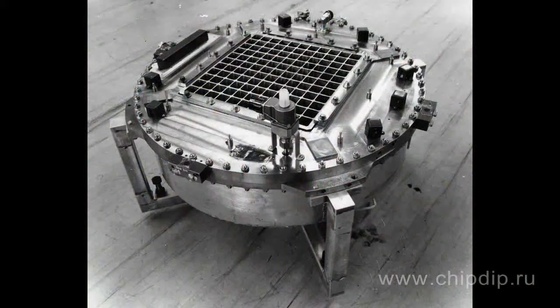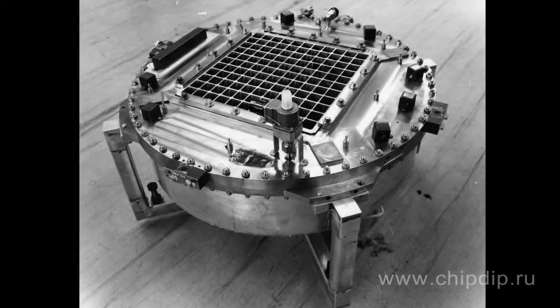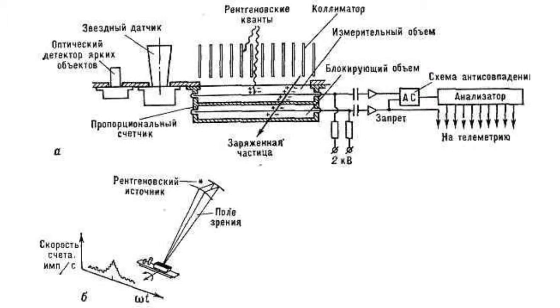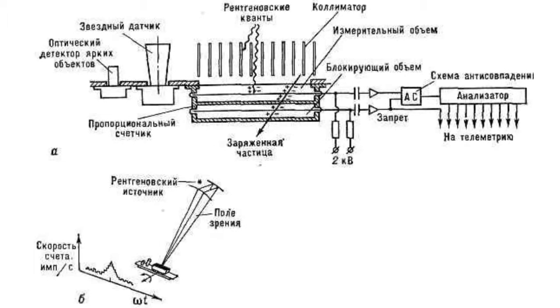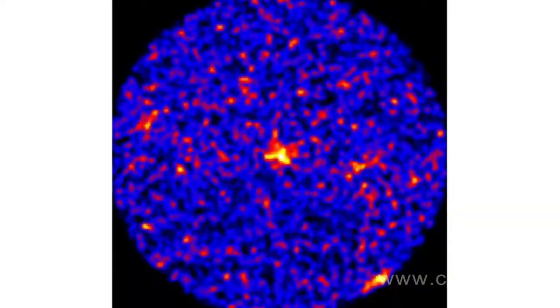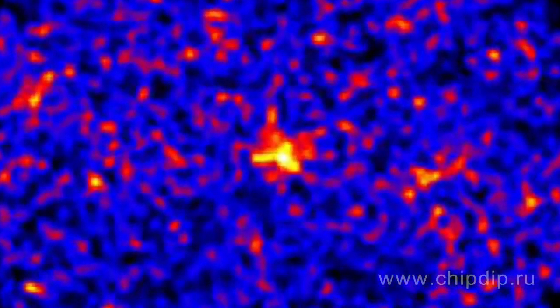The anticoincidence technique is a solution to this problem. There is a special device used to identify the precise direction in relation to the X-ray source. It comprises a flat-field collimator, which includes a set of blades limiting the field of view, and a star tracker which records X-ray photons going through the collimator. An occurring current impulse goes through an anticoincidence gate, then a special analyzer determines energy characteristics of photons.